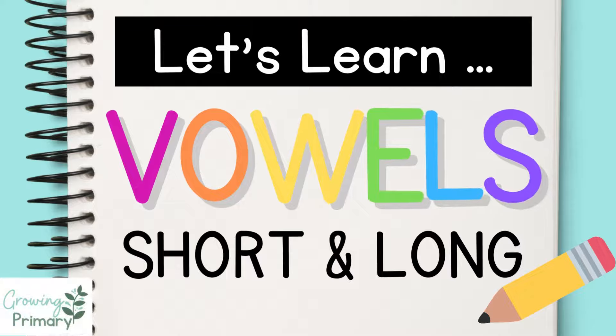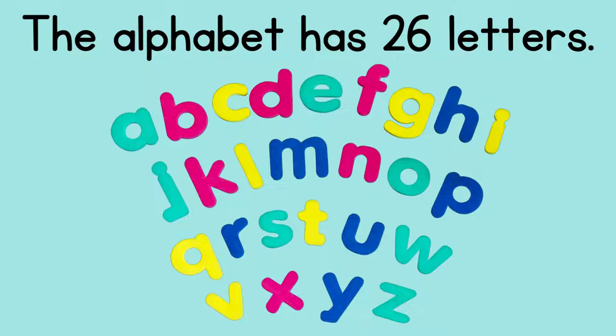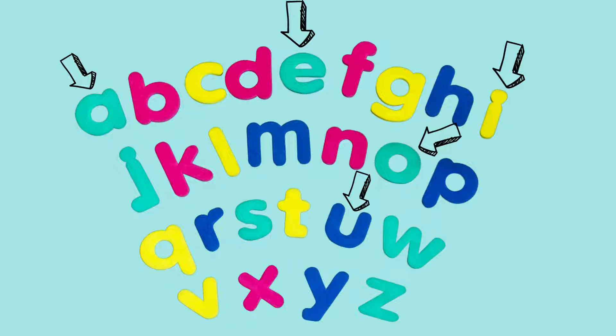Let's learn vowels, short and long. The alphabet has 26 letters in it. Of those 26 letters, there are five main vowels: A, E, I, O, and U. These vowels make a short sound and a long sound. Let's go through each vowel's two sounds.